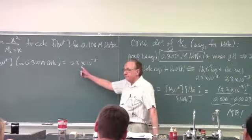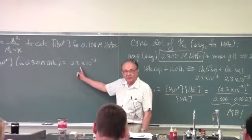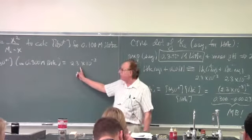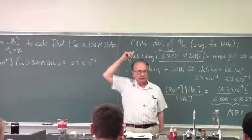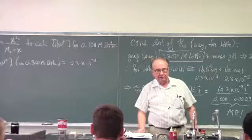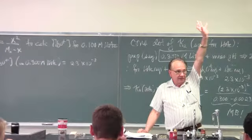To something which is one third of what it was in the original acetic acid solution. Is that true? Can I take this and divide it by three and get a reasonable approximation of the hydronium ion concentration for this solution? Yes or no? No. Yes or no? Yes.